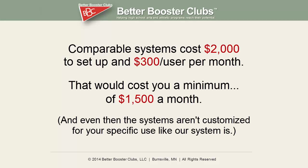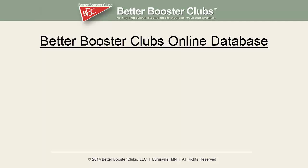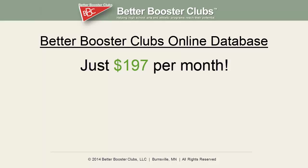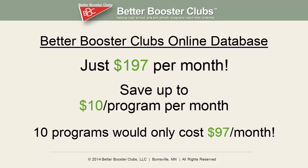But you don't have to pay anywhere near that for our system. The Better Booster Club online database is available now — but only for a limited time — for just $197 per month per program. If additional arts and athletic activities at your school subscribe, you can save up to $10 more per program per month, up to a maximum of $100. So if you can get 10 other programs involved, each of you would only pay $97 a month. Either way, it's a great deal compared to other comparable systems.